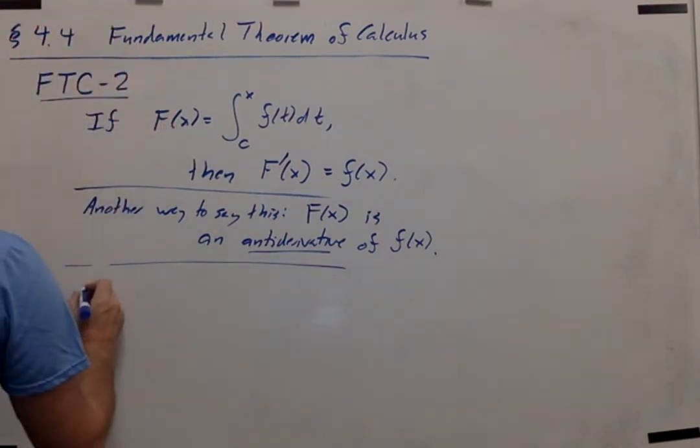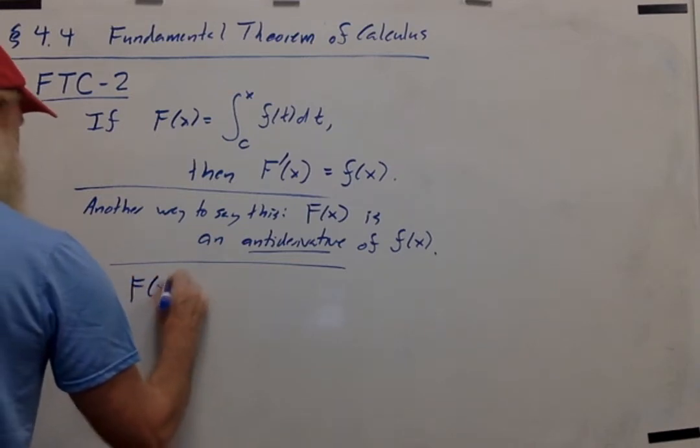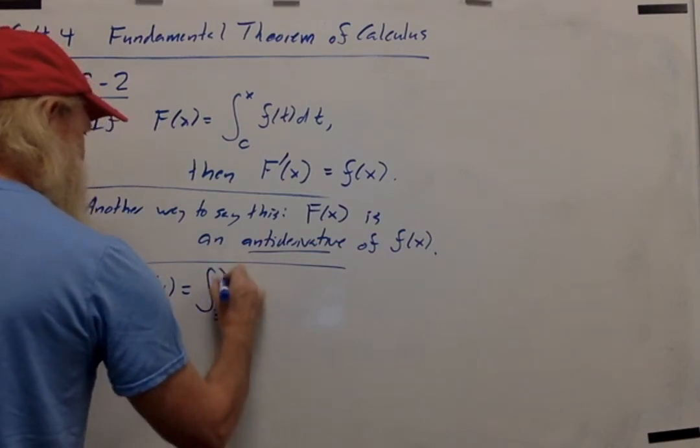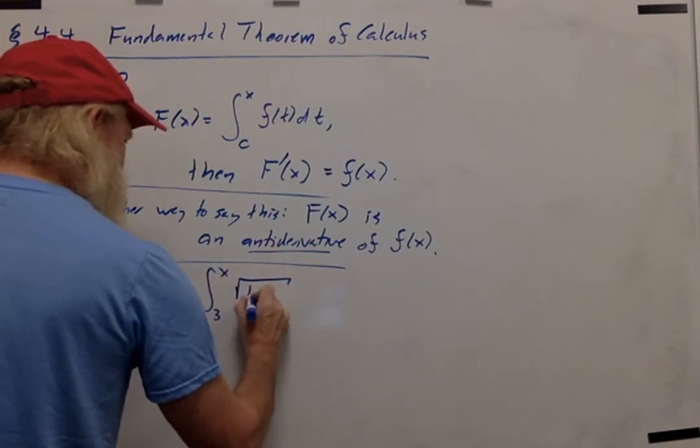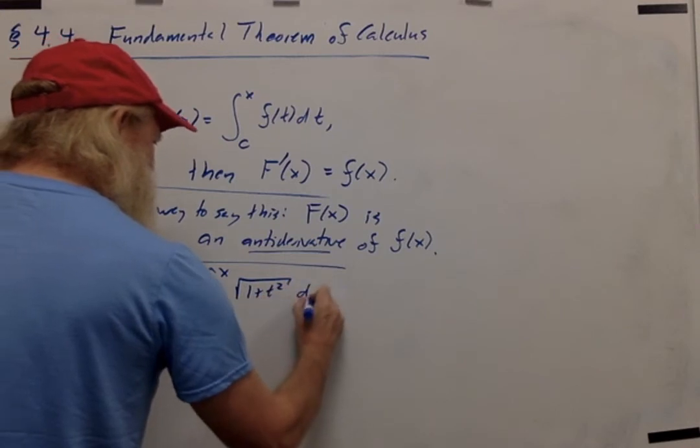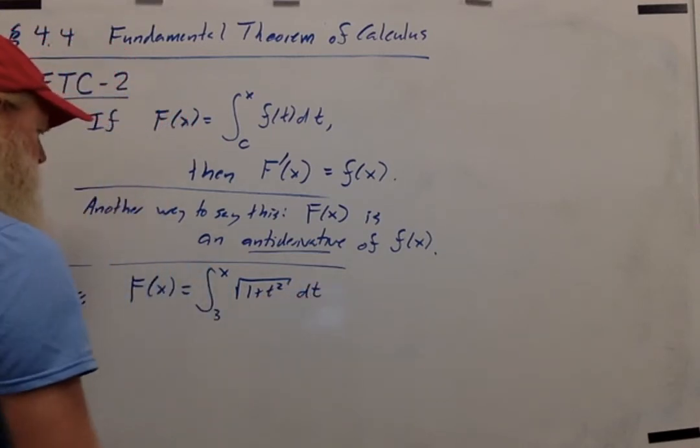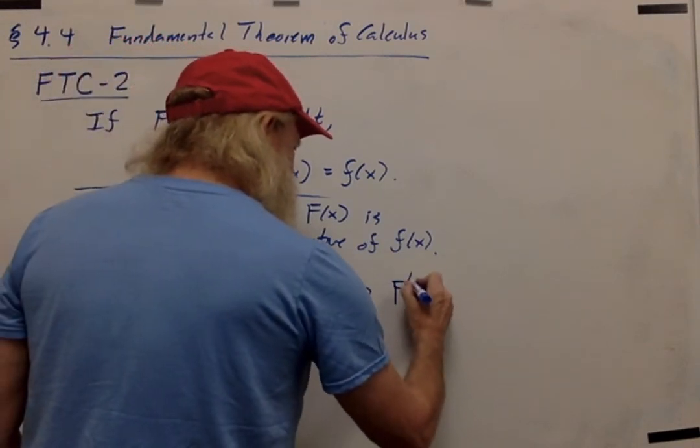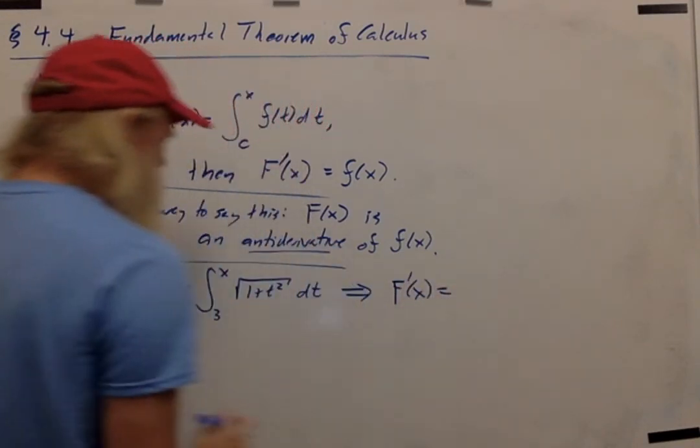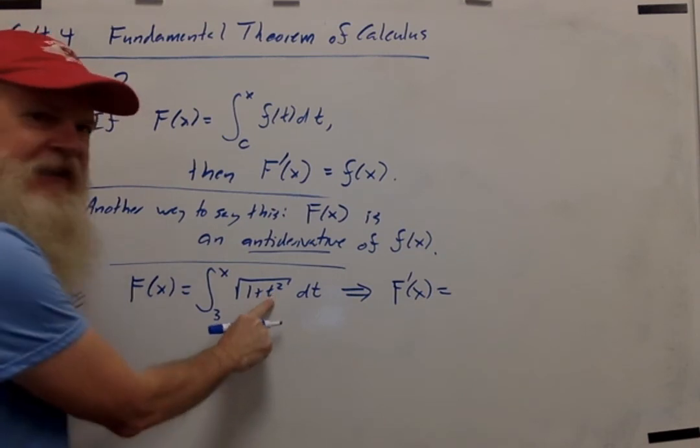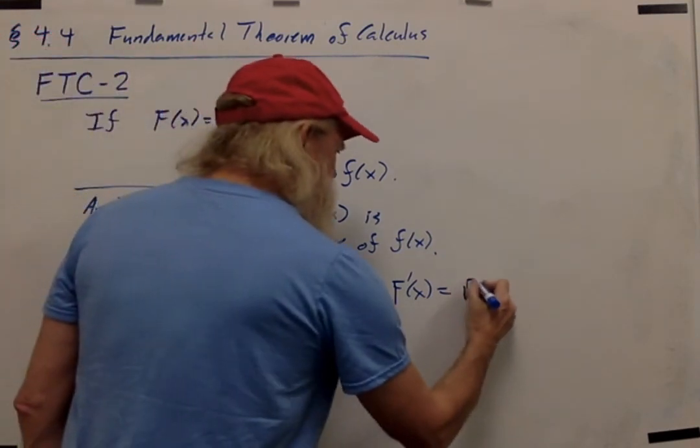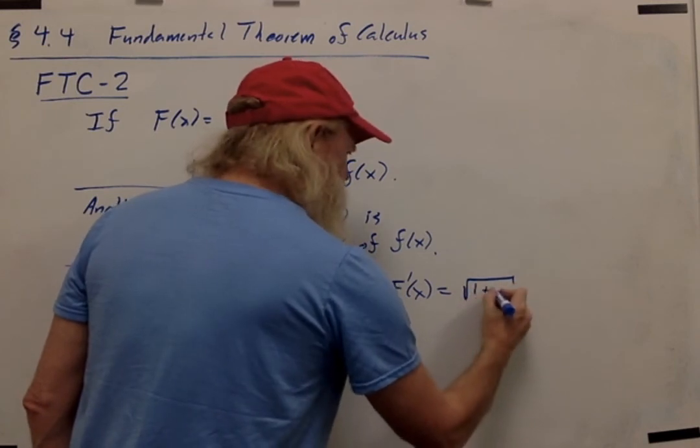So for a couple of quick examples, if big F(x) were equal to the integral from 3 to x of the square root of 1 plus t squared, then the derivative of that function would be what you get if you replace the t's in the integrand with x. So the square root of 1 plus x squared.